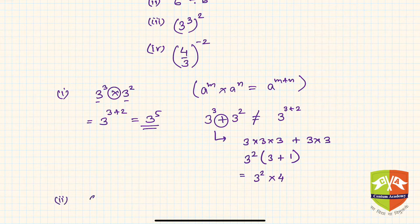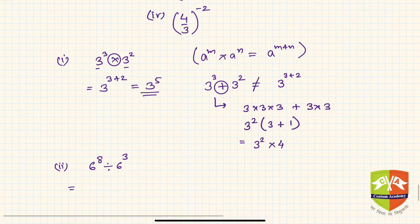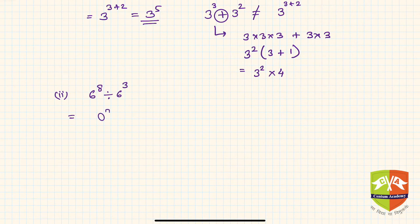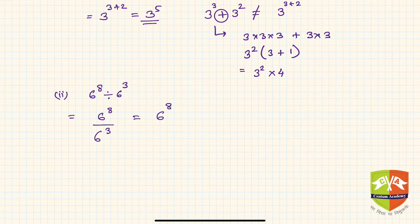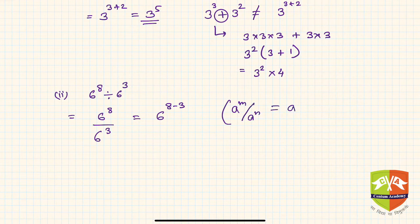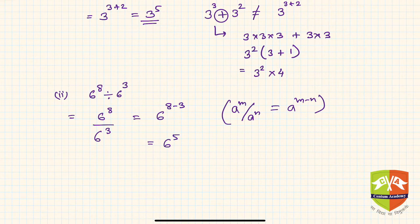Question number 2 is 6 to the power 8 divided by 6 to the power 3. The bases are the same and it is in quotient form, so we apply the rule: a to the power m divided by a to the power n equals a to the power m minus n. Hence it is 6 to the power 8 minus 3, which is 6 to the power 5.